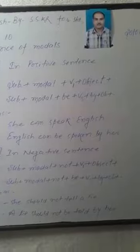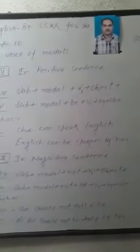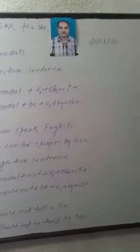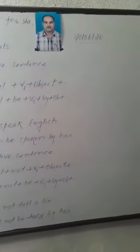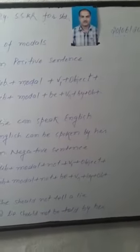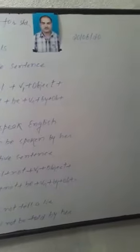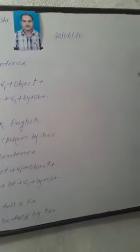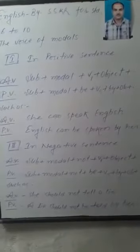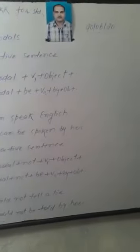Instruction No. 2: In a Negative Sentence, Active Voice structure is Subject plus Modal plus Not plus Verb plus Object. Passive Voice structure is Subject plus Modal plus Not plus Be plus Third Form plus By plus Object. For example, Active Voice: 'She should not tell a lie.' Passive Voice: 'A lie should not be told by her.'